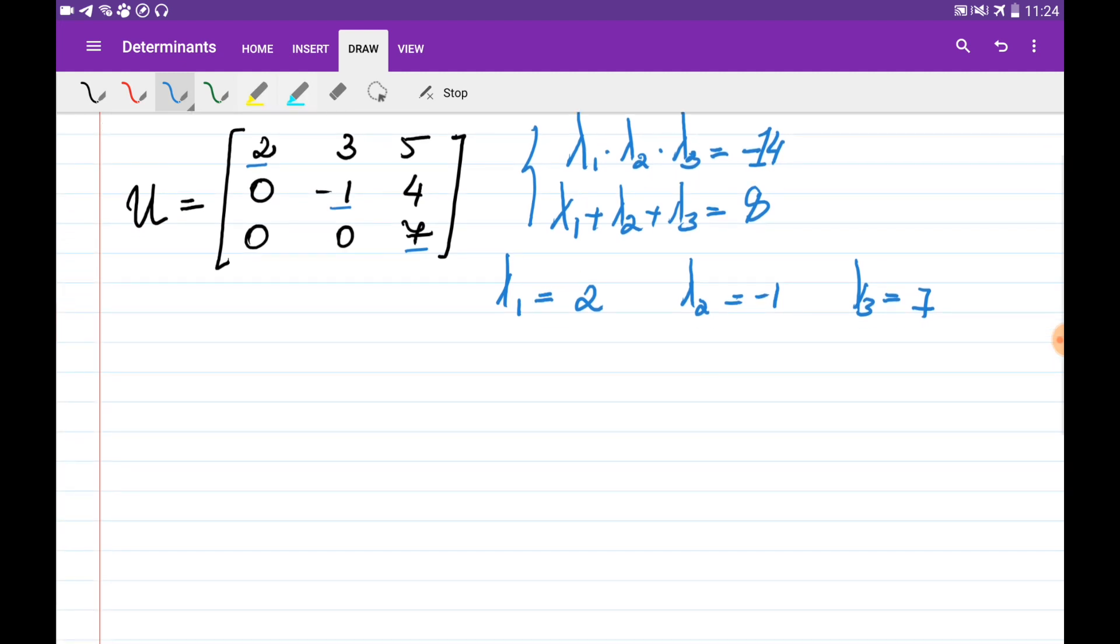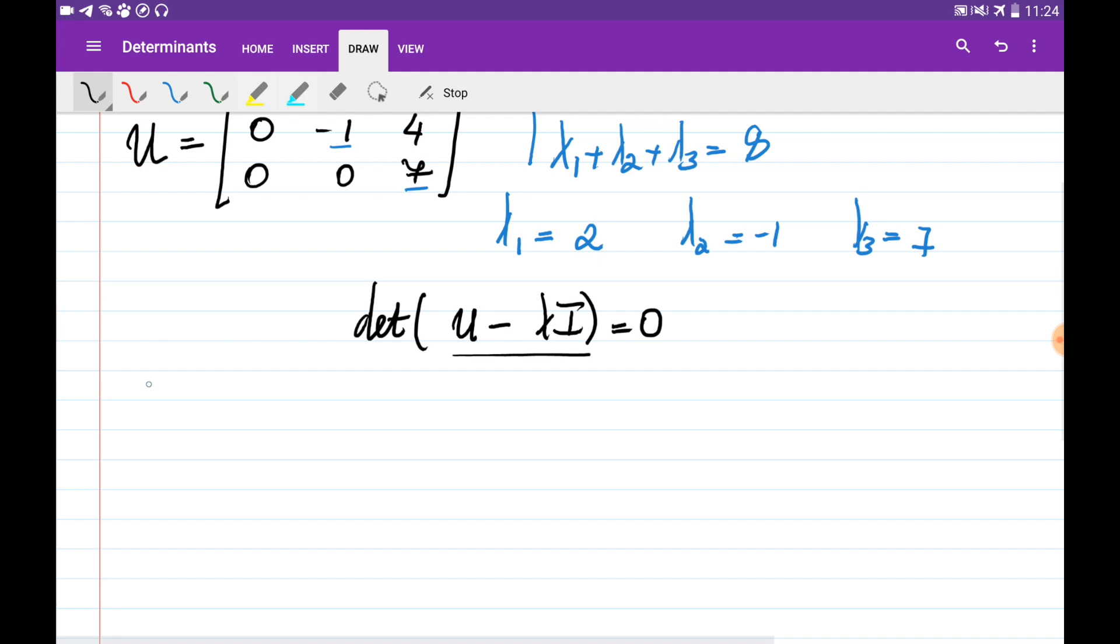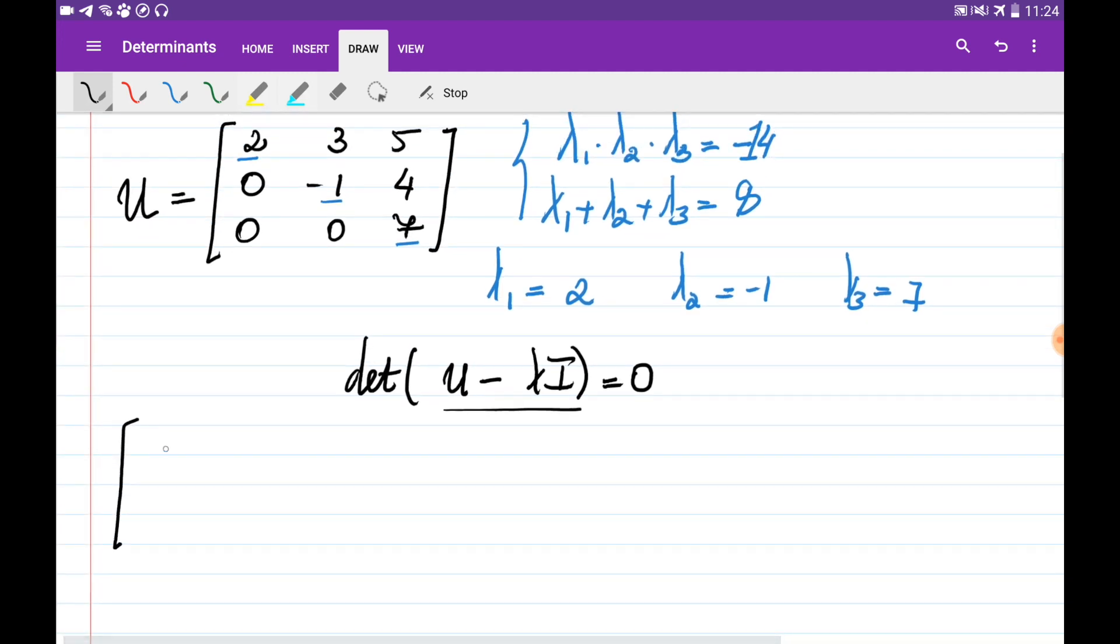We can find the eigenvalues of the matrix by solving this equation: det(U - λI) = 0. Let's construct this matrix. It is U = [2, 3, 5; 0, -1, 4; 0, 0, 7] minus λ multiplied by the identity of the same size, which is I = [1, 0, 0; 0, 1, 0; 0, 0, 1].